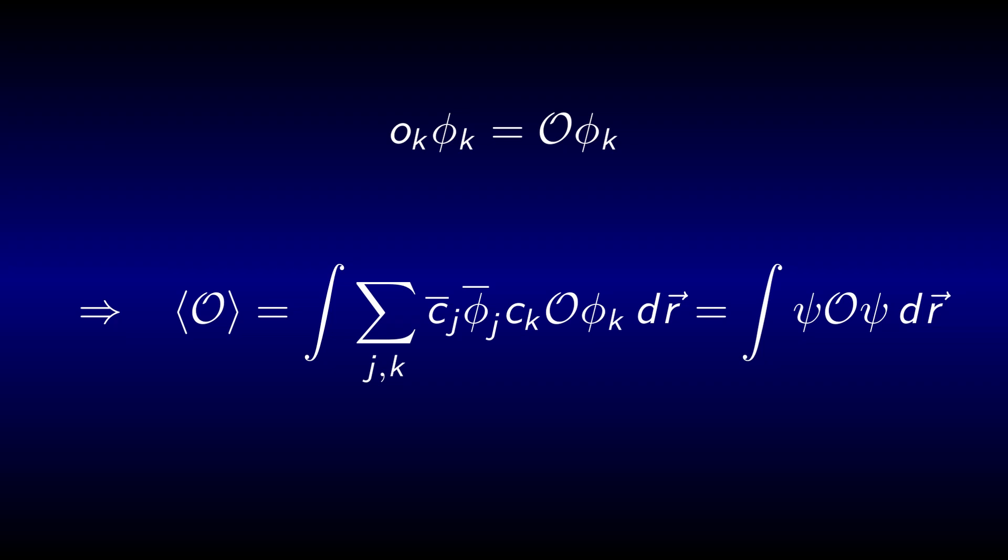Have we won something? First off, I personally think this expression for the expectation value is more beautiful than the one we had before, which justifies its existence for me. But there's more. Although we extensively used the eigenvectors of the operator in the derivation, they have completely vanished in the final expression.